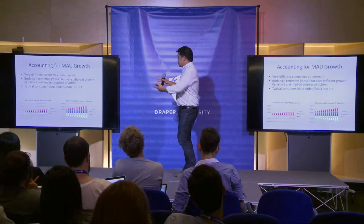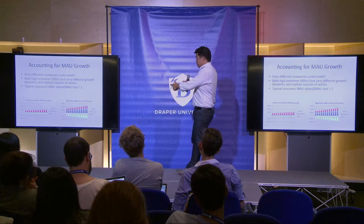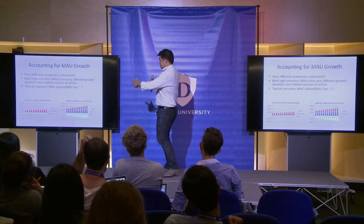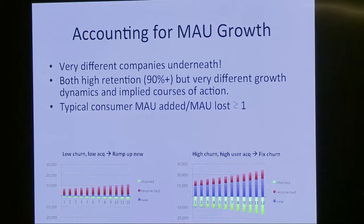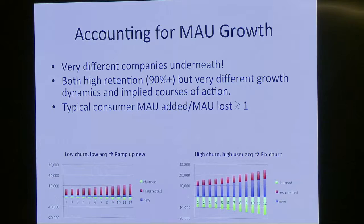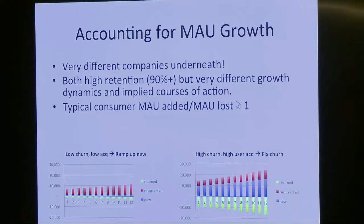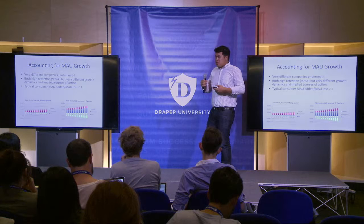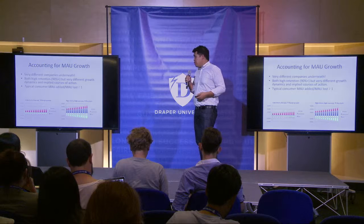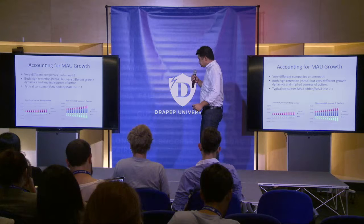Now here are two examples. Both of these actually produce the same result — 5% growth month over month — but they're really different. The low churn, low acquisition case is the case where there's a lot of resurrection, that big red chunk, bringing back a lot of users who have been gone. Very low churn and very little new. So it's clear what to do: ramp up new users — buy them, spend some money on advertising, aggressively push users to refer friends — because we're not getting many new users and we're not losing many either.